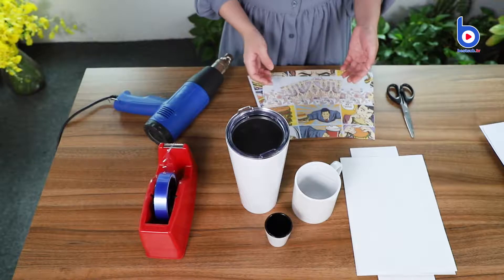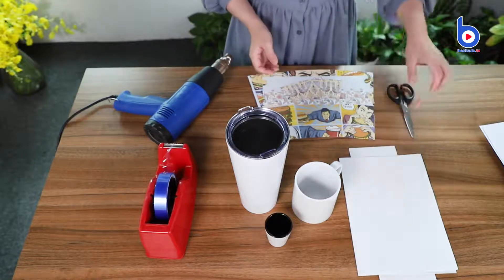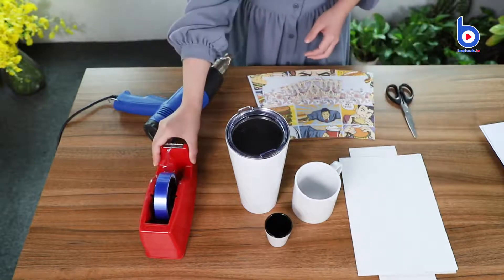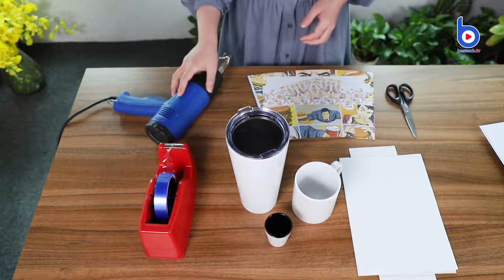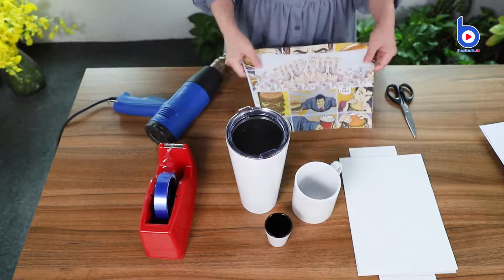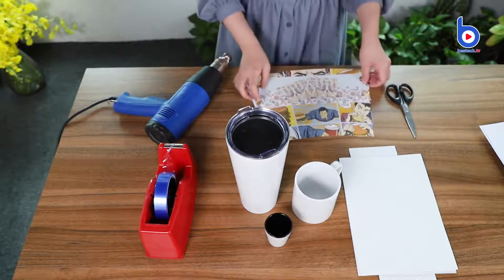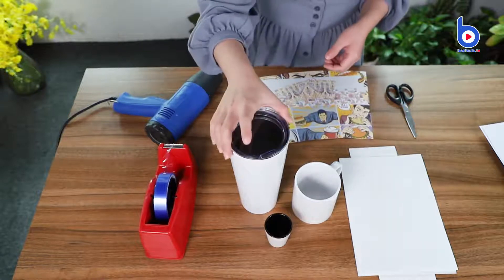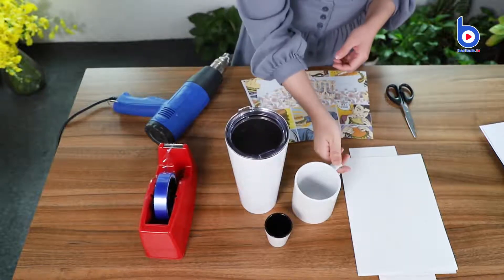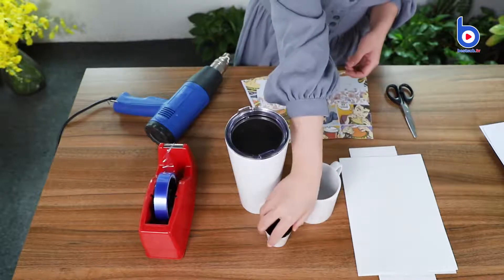Here are my tools: shrink films, scissors, thermal tape and a heat blower gun. And these are my images. And I'm going to print a large tumbler, 11 oz white mug and a short glass.